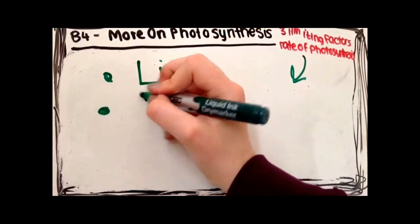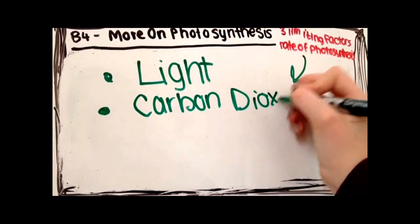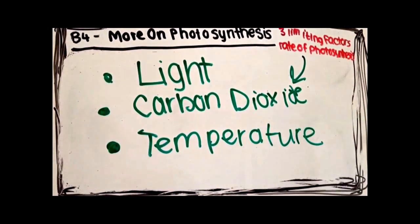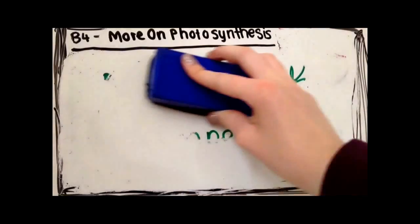Usually though, if temperature is the limiting factor, it is because it's too low and things need warming up a bit. So to conclude, the limiting factors on the rate of photosynthesis are light, carbon dioxide and temperature.